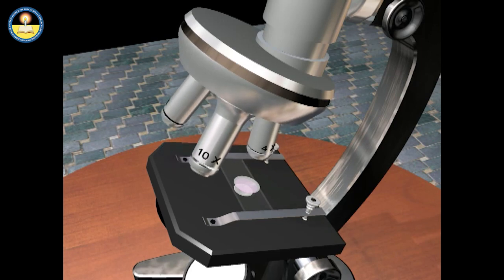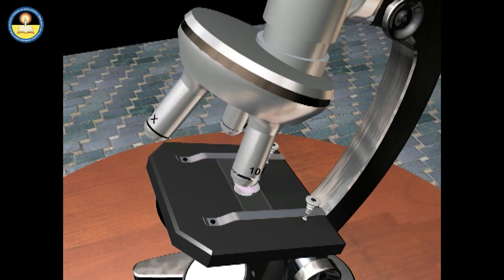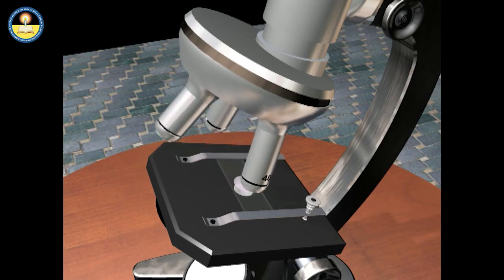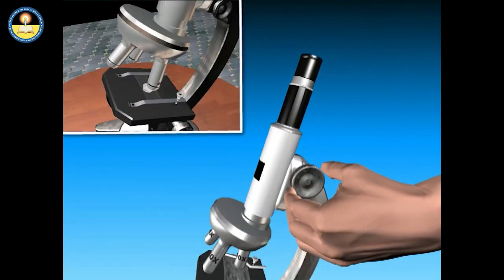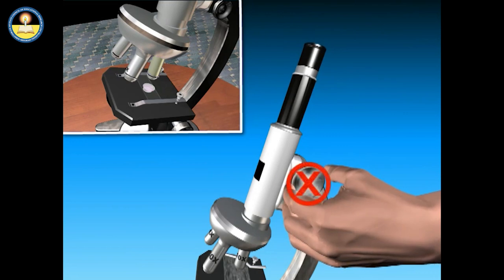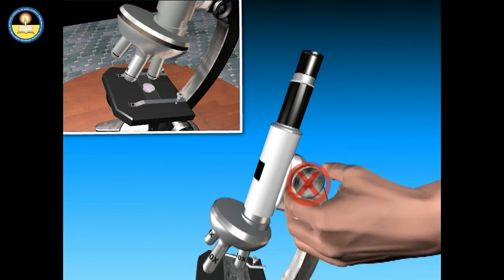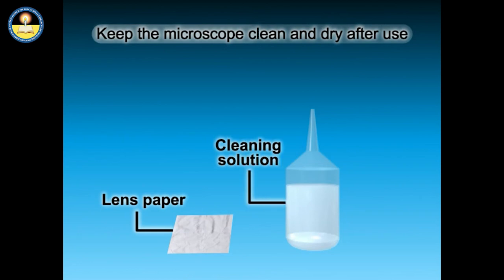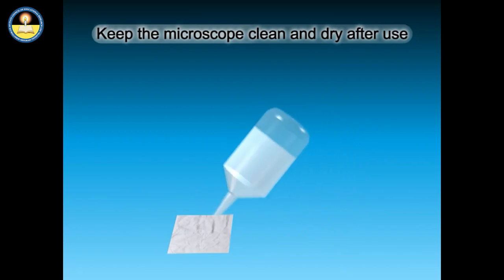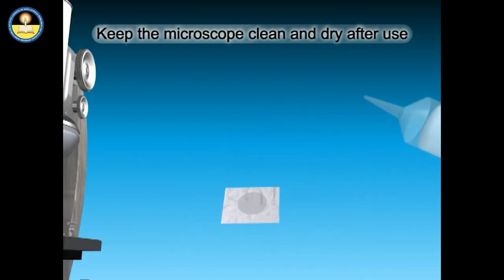Start focusing with a low power objective lens first and then focus it under high power if required. Never use the coarse focus with the higher power objective lenses. Always keep the microscope clean and dry. Use lens paper and cleaning solution to clean the lenses. Each time, use a fresh paper to wipe the lens surface.